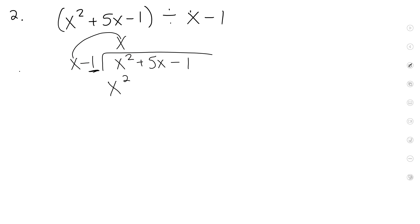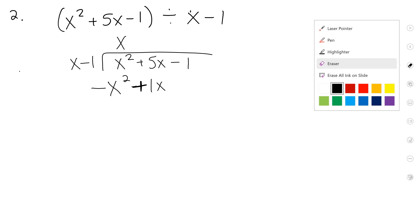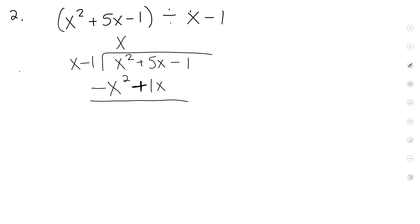Now we're going to multiply: x times x is x squared. Since we have another item here, we're going to multiply that one too. What's negative 1 times x? Now what do we do? Change this sign and change this sign, right? If you put another negative here, two negatives make a positive — this just becomes positive.